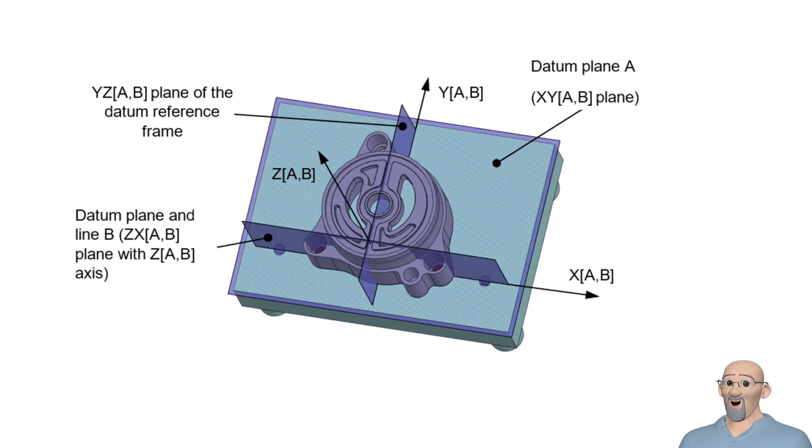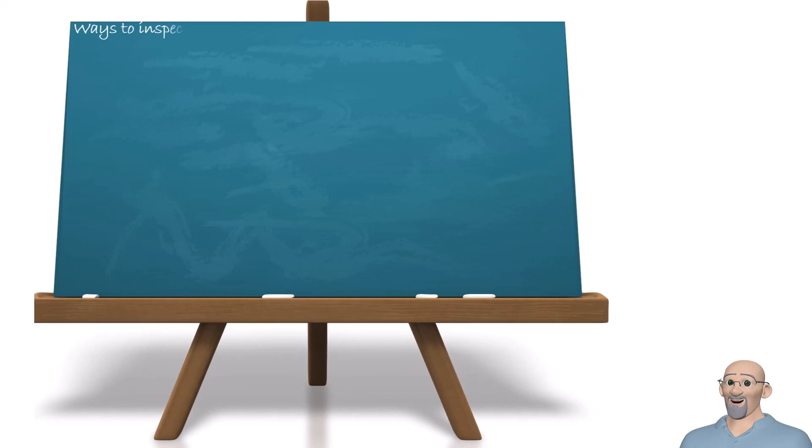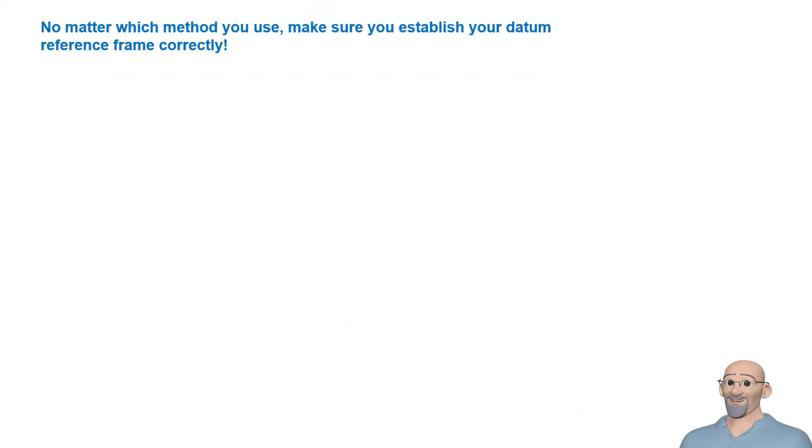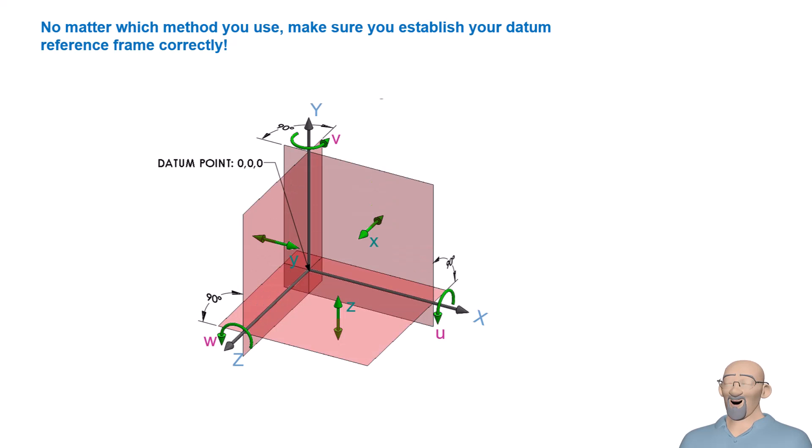Our example shows how to use a physical datum feature simulator. You could also use a measurement system software or point cloud software. As is always the case, make sure you establish your datum reference frame correctly by modeling datum feature simulator concepts and requirements provided in ASME Y14.5 to avoid unacceptable, inaccurate measurement data.